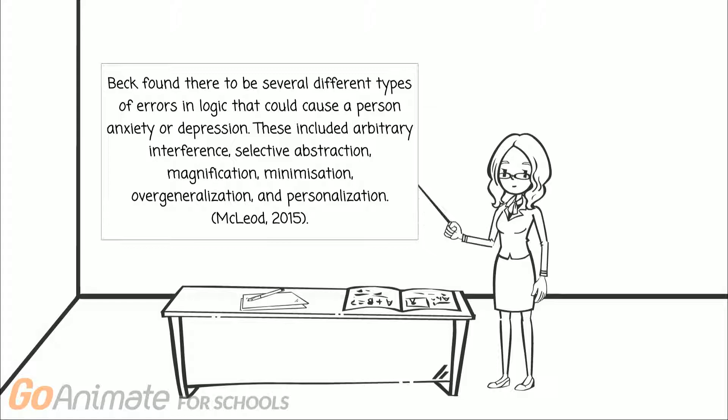Beck found there to be several different types of errors in logic that could cause a person anxiety or depression. These included arbitrary interference, selective abstraction, magnification, minimization, overgeneralization, and personalization.